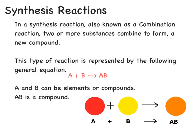In a synthesis reaction, or a combination reaction, two or more substances combine to form a new compound. The reaction can be represented with the general formula A plus B yields AB, where A and B can be either an element or a compound, but AB is always a compound.